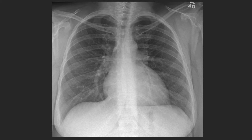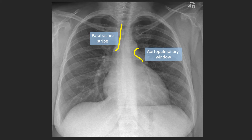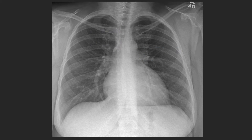We can also notice some lines and stripes. The first is the right paratracheal stripe — the portion of the trachea that interfaces with the lung and mediastinum. Another is the aortopulmonary window, or AP window, a concavity just below the aortic knob created between the aortic knob and the main pulmonary artery — normally there should be a concavity. We can also see the descending aortic stripe, which represents the outer edge of the descending thoracic aorta, extending inferiorly from the aortic knob.